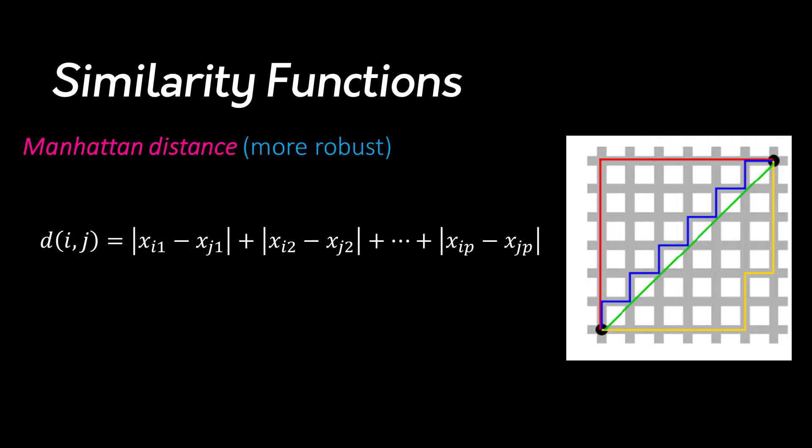That takes us to the next similarity function, which is Manhattan distance. This is considered more robust than Euclidean. It's calculated as if you have to traverse the actual data points to get from one to another — much like you would navigate when walking in Manhattan, thus the name. You can't just walk through all the buildings to get from the Empire State Building to the Intrepid; you have to go so many short blocks and so many long blocks. As you can see, we've got a red, blue, and yellow line each taking different paths to point B, but in each case the distance ends up being the same. That calculation is simply the sum of the absolute differences between the measures, for however many dimensions or features we have in our model.